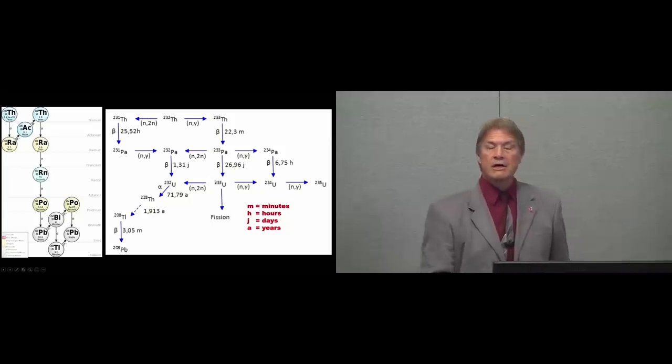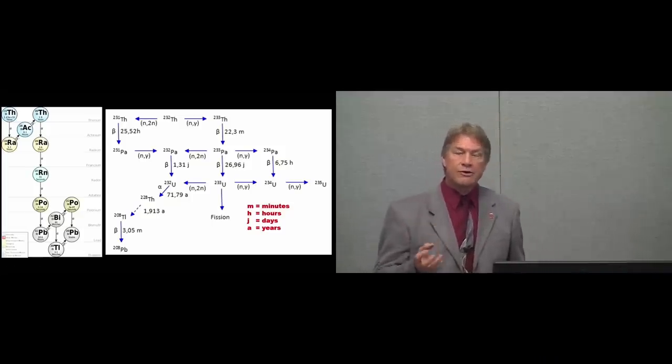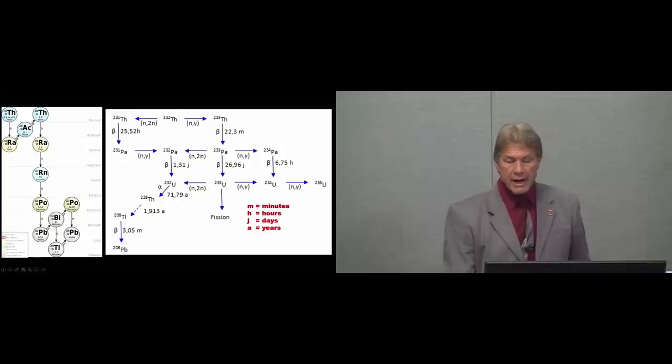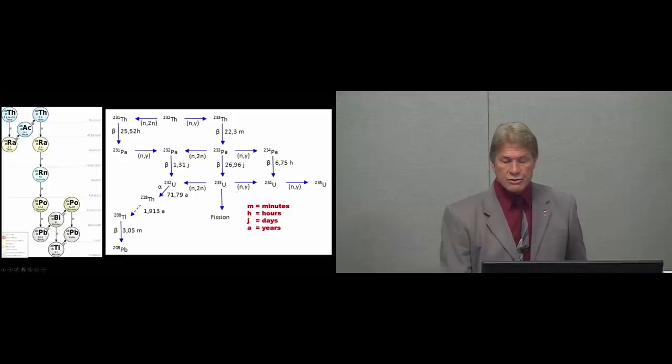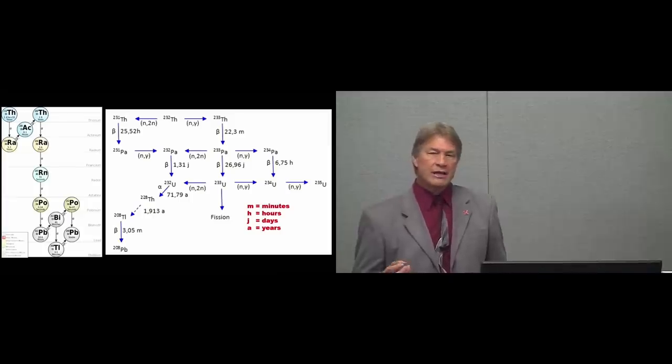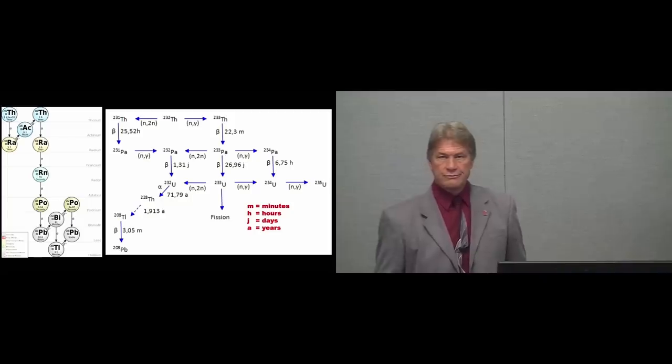And the uranium-233 is the fissile fuel that you want. Just to point out a couple things on this graph that we'll come back to: In a nuclear reactor, these N2N reactions and N-gamma reactions do occur because I've got lots of neutrons around. So I am going to end up with some uranium-232, and since its half-life is 71 years, it's definitely going to sit around. And it turns out this can be a huge advantage because you can't make a bomb if you've got even tiny bits of U-232. But we'll come back to that.